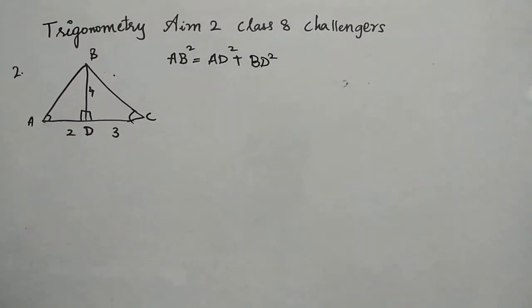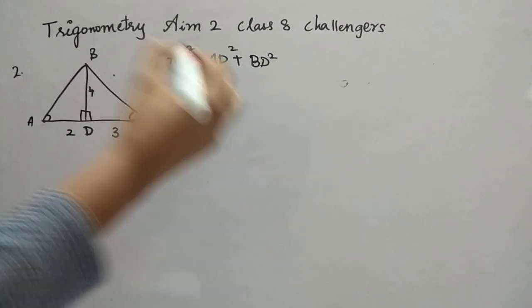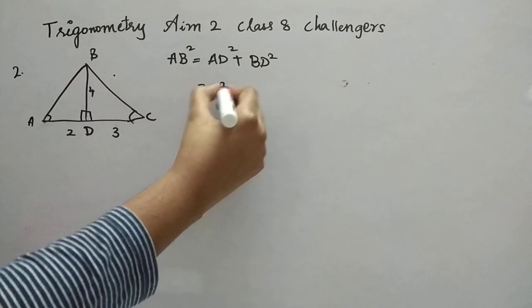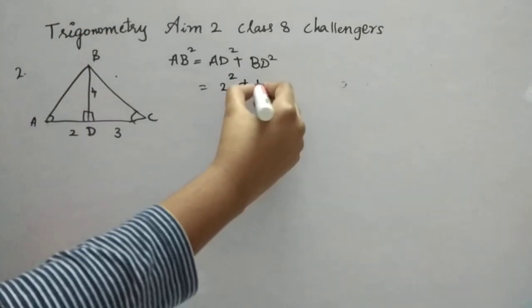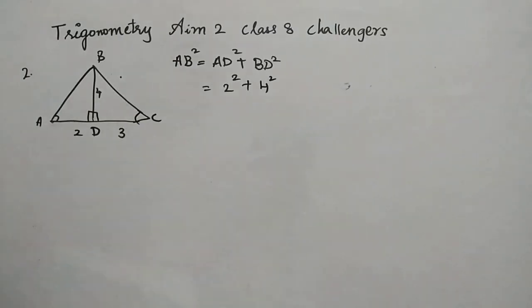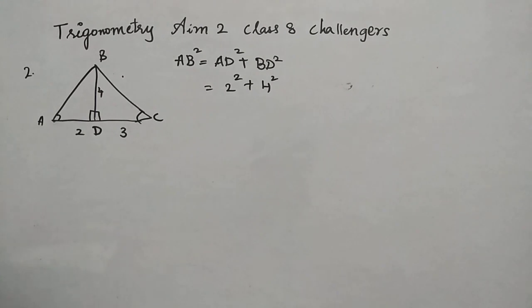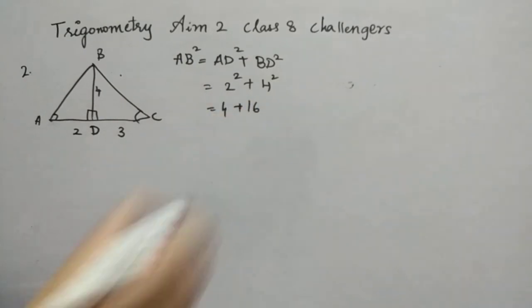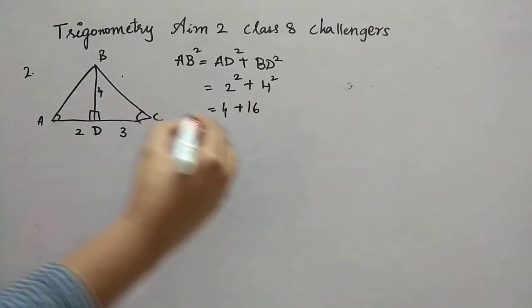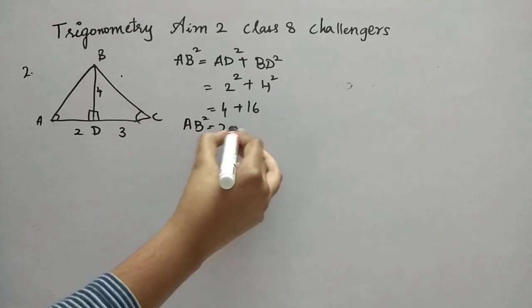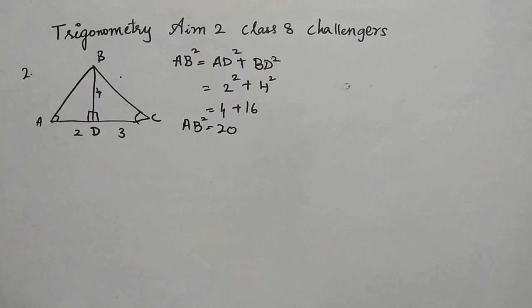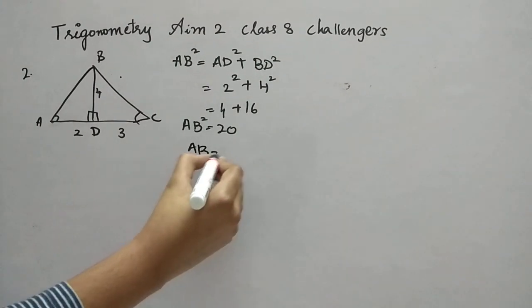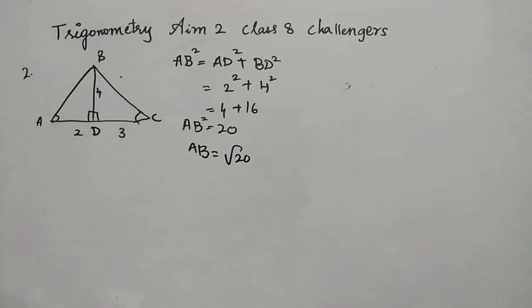So AB square is equal to AD square plus BD square. So this AB square, we don't know. Keep it like that. AD, AD is 2 square. BD is 4 square. Right, so according to this, we have to find. So 2 square is 4 and 4 square is 16. So with this, we can conclude it is 20. So AB square is 20. Right, not AB. Now, so AB will be square root of 20. Because that square will be transposed. It will become root.